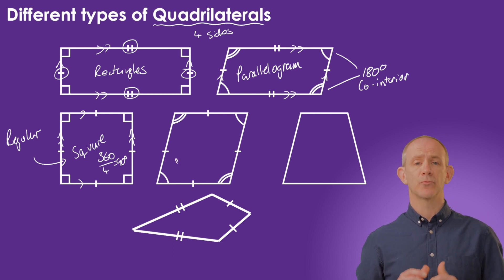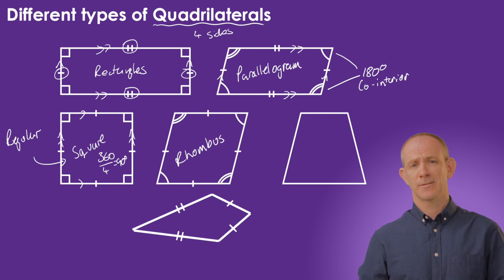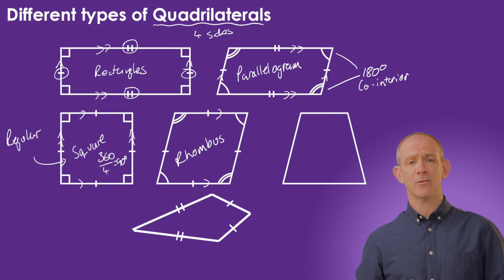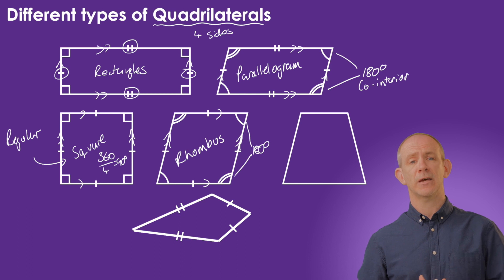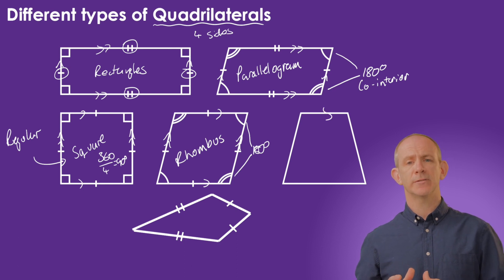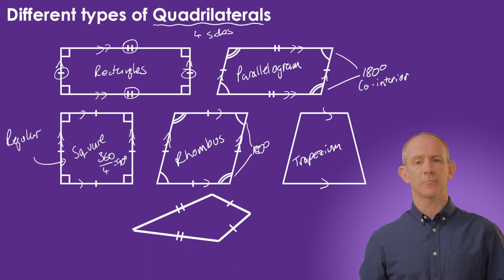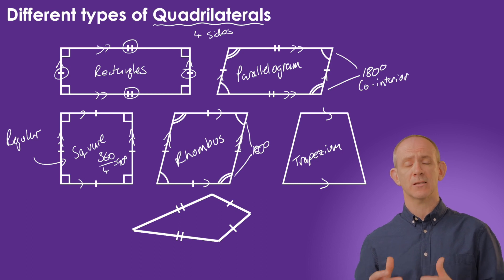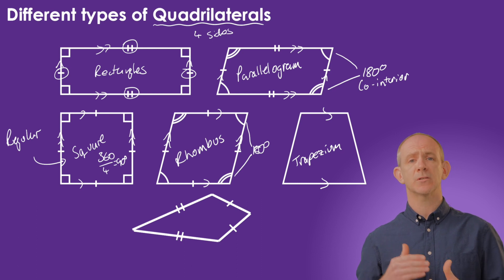Underneath that we've got what's called a rhombus, which looks like a square that's been squished. All four sides of a rhombus are the same length. The opposite angles are the same, and the angles on the left-hand side add up to 180, and the angles on the right-hand side add up to 180. The next shape only has the property of parallel lines — it's called a trapezium, and that's the only thing it needs in order to be classified as one. There's nothing special about the angles; it's just that two of the sides are parallel.